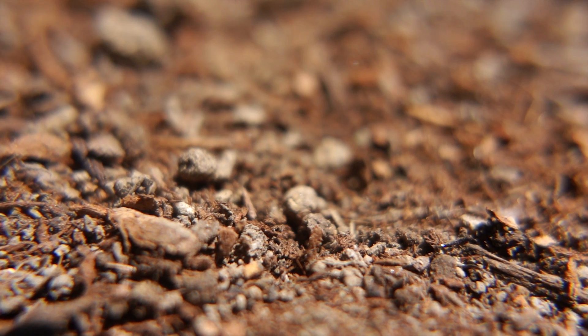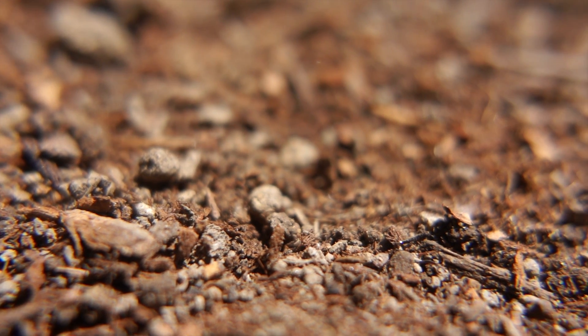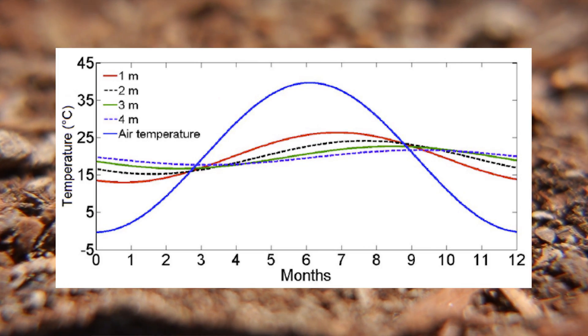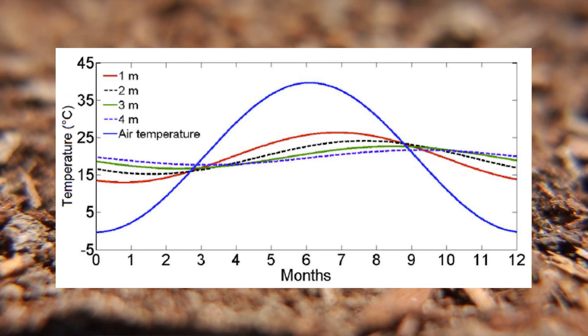The best solution that I could think of was, instead of using air temperature, using soil temperature. Soil temperature is going to be exactly accurate to my soil, and it's also way less variable across time. The only problem is there's no online service that can give me the soil temperature in my backyard — I'd have to build my own sensor. So that's exactly what I did.